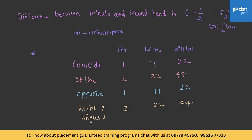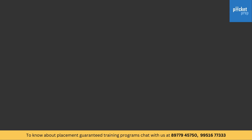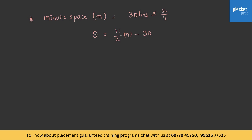This table has to be memorized, which makes the problems easier. One important formula to memorize in the clocks concept is the minute space calculation formula: M = 30H × 2/11. The angle between the hour hand and the minute hand is: θ = (11/2) × M − 30 × H.